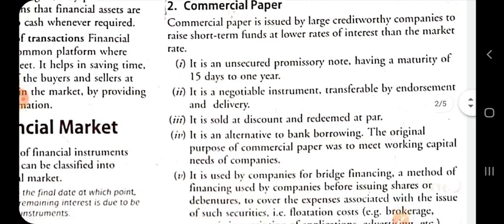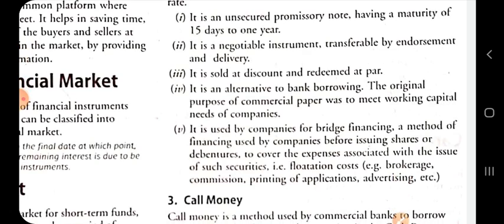The fifth feature is that commercial paper is used by companies for bridge financing — a method of financing used by a company before issuing shares or debentures to cover the expenses associated with the issue of such securities, known as flotation costs, which include brokerage, commission, printing on application, and advertising.